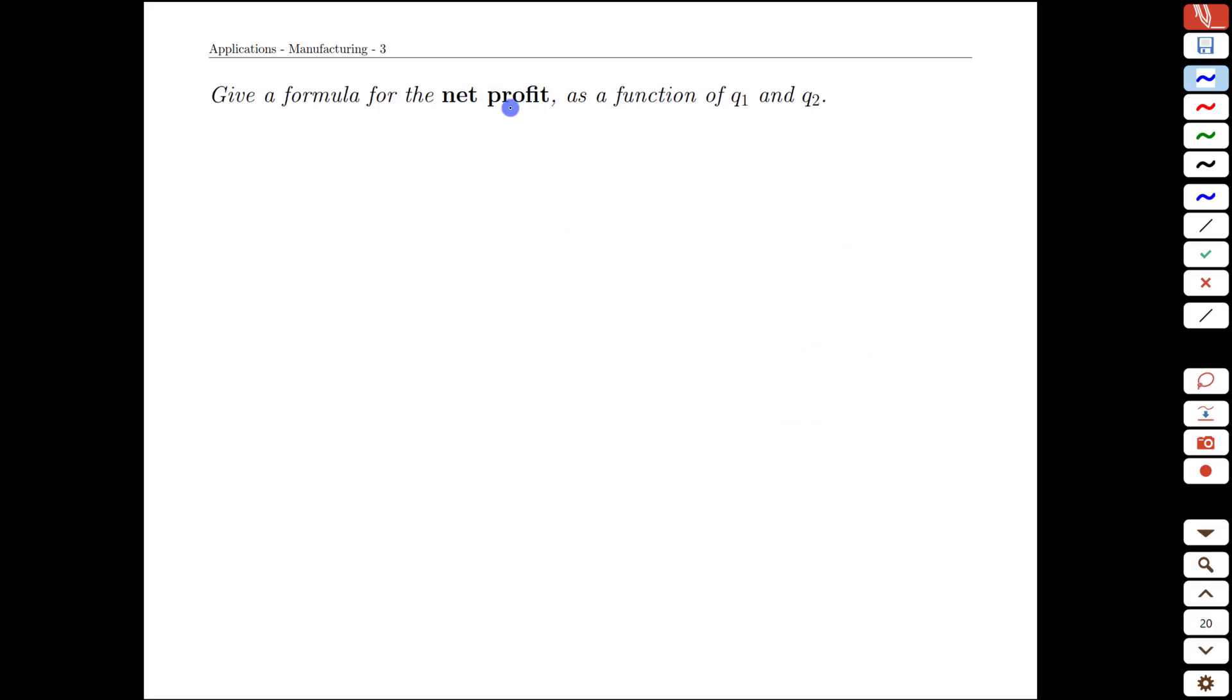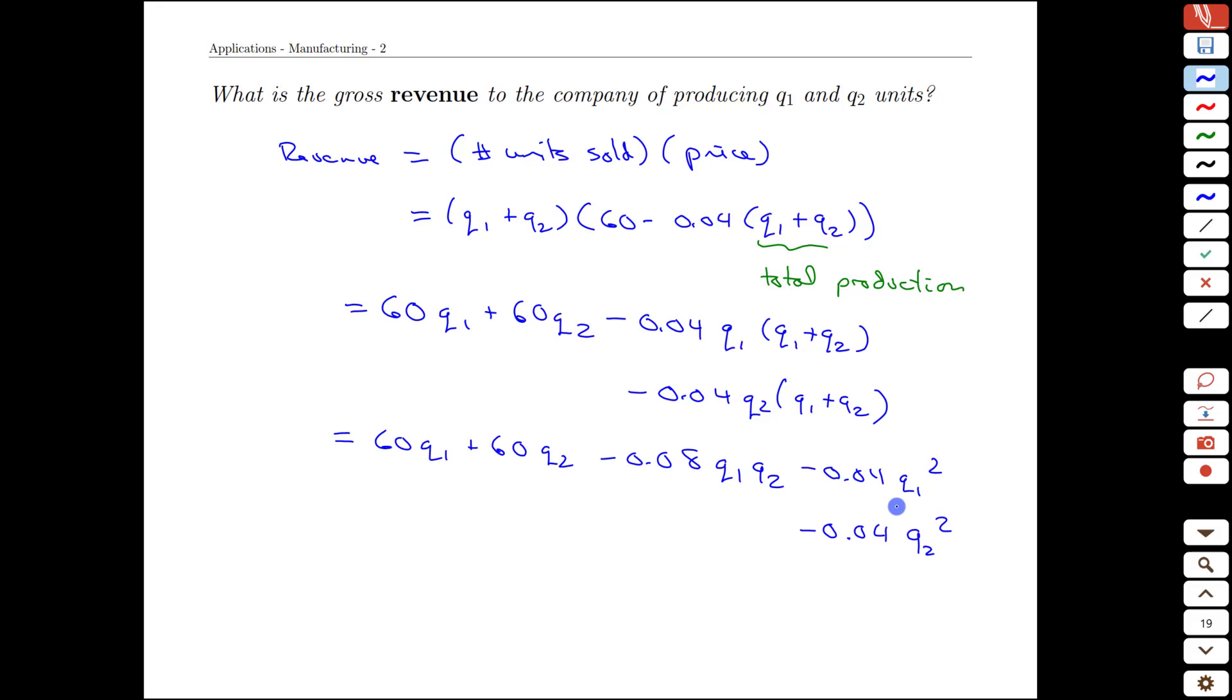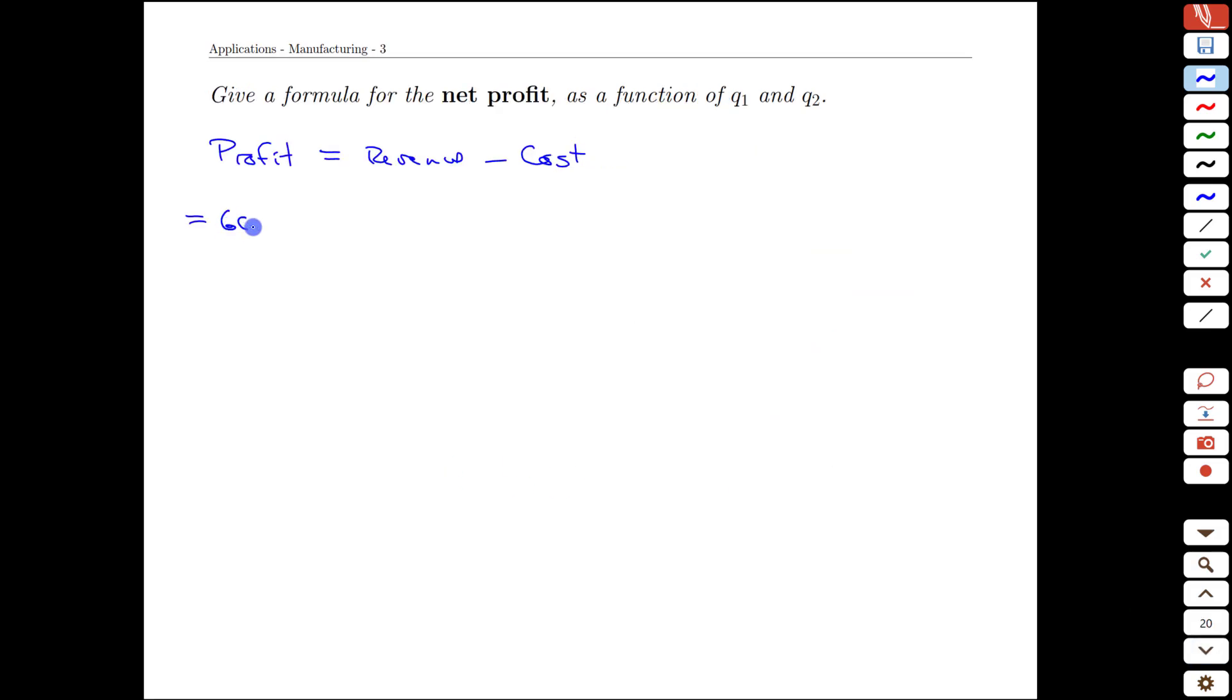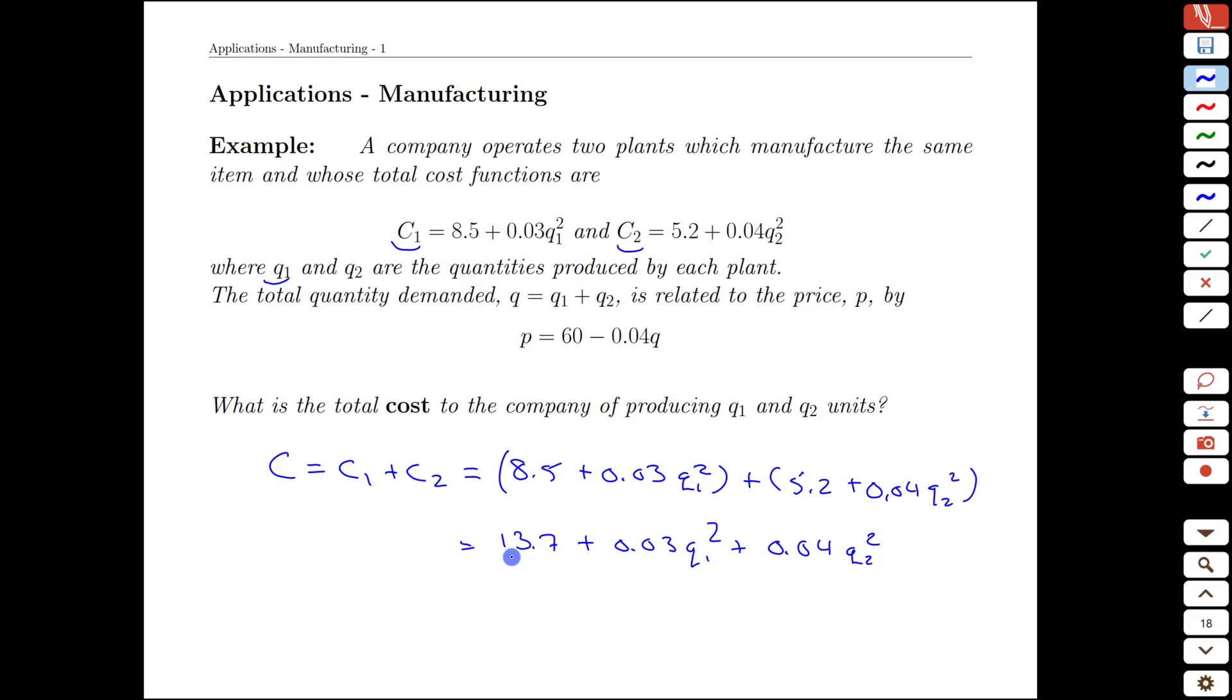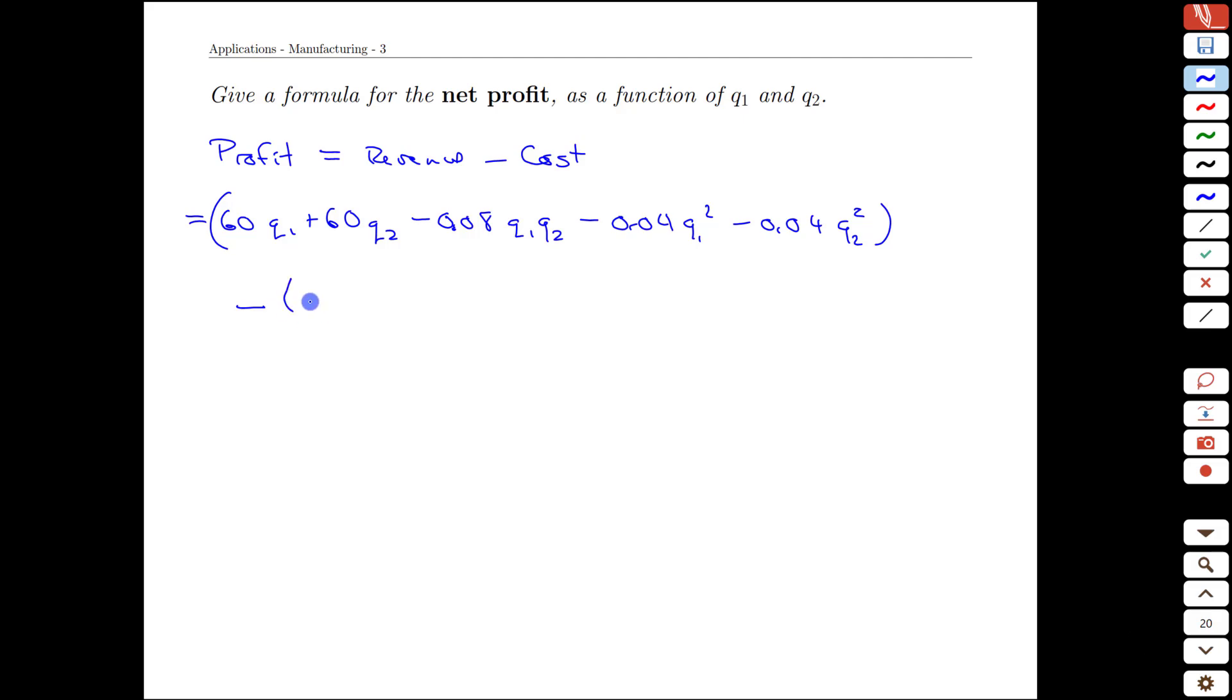We then want to combine that revenue and cost to get the profit. So our total profit is revenue minus costs, and the revenue expression we found earlier was this final statement here: 60 q1 plus 60 q2 minus the 0.08 q1 q2 minus the 0.04 q1 squared and another 0.04 q2 squared. All of that minus the costs.